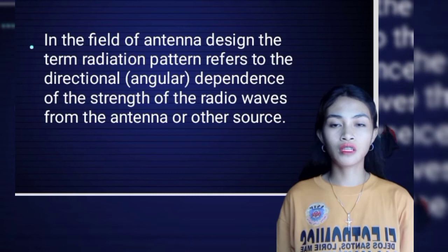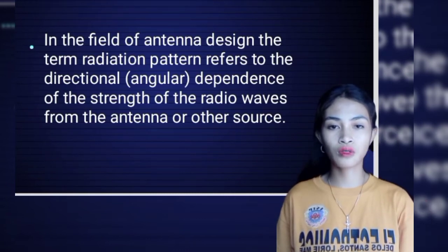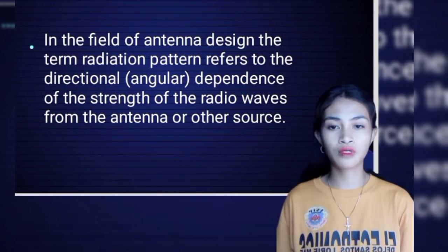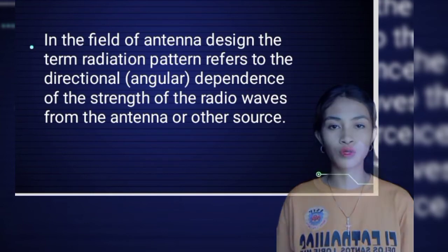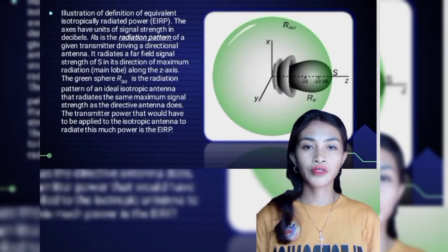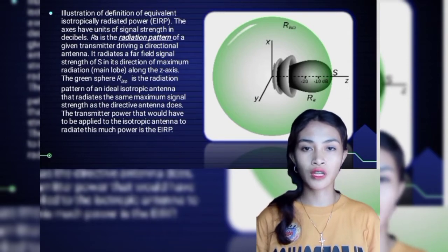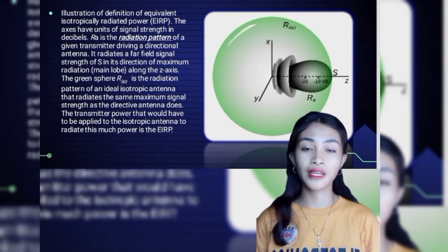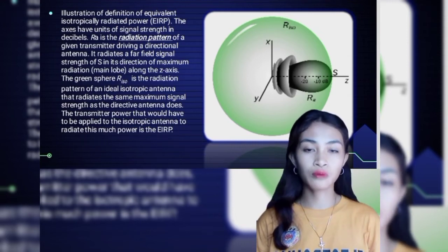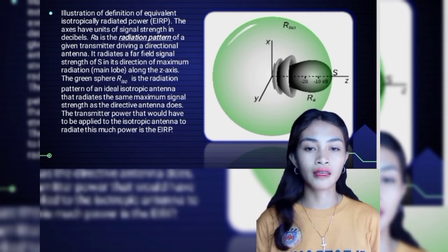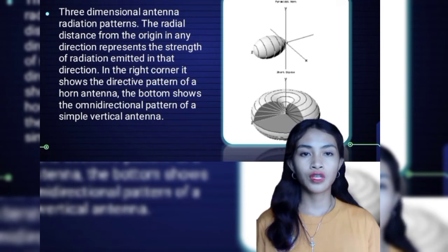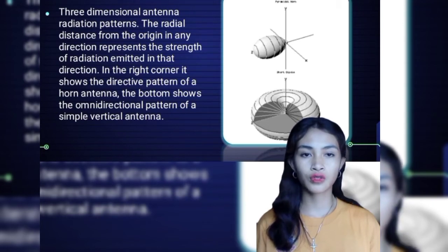Radiation pattern. In the field of antenna design, the term radiation pattern refers to the directional or angular dependence of the strength of the radio waves from the antenna or other source. A radiation pattern represents the energy distribution as a function of the signal transmitted by the antenna. Although the term radiation pattern is used, it applies just as well to receiving antennas. Three-dimensional antenna radiation pattern: the radial distance from the origin in any direction represents the strength of radiation emitted in that direction.